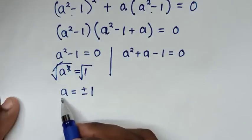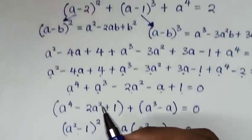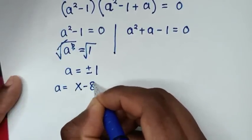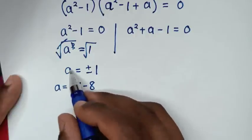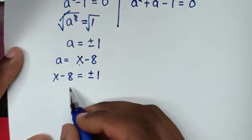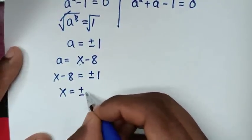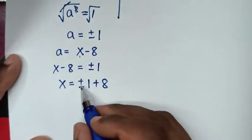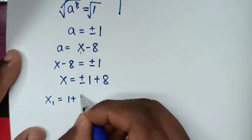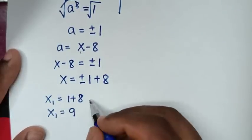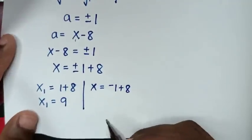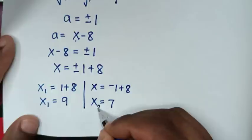Since a is plus or minus 1, and we recall that a equals x minus 8, we substitute: x minus 8 equals plus or minus 1. Taking negative 8 to the other side, x equals plus or minus 1 plus 8. So the first value, when positive: x₁ equals 1 plus 8, which is 9. And the second value, when negative: x₂ equals negative 1 plus 8, which is 7.